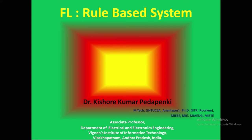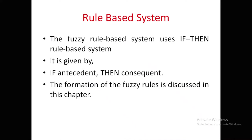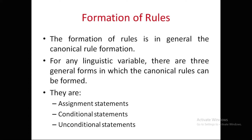The fuzzy rule-based system uses an if-then rule structure. It works like: if something happens, then some other thing will occur. This is given as: if antecedent, then consequent. Antecedent means something happens; consequent means the other thing that will happen as a result. Let us understand this with some examples. The formation of fuzzy rules is discussed in this chapter.